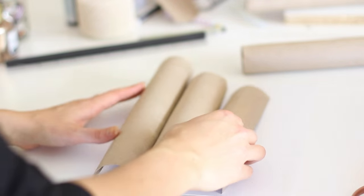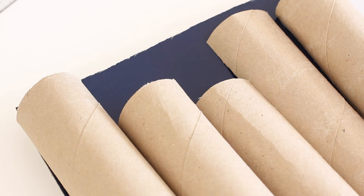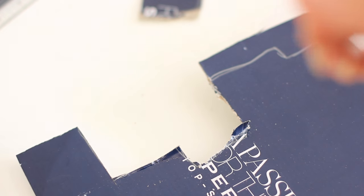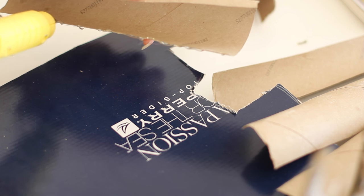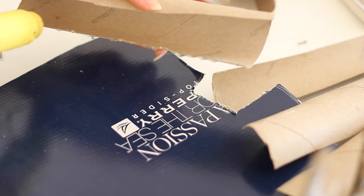I then took a sharpie and traced along the line so that I could cut out what part of the shoebox lid I did not need. And then I just hot glued the paper towel rolls to the shoebox lid.